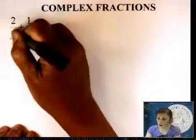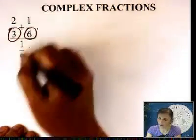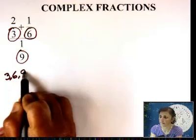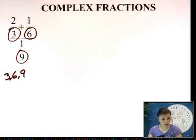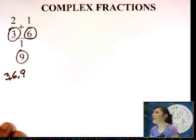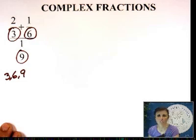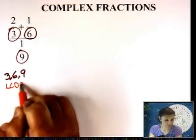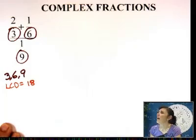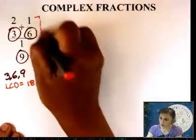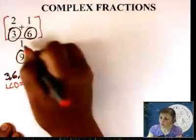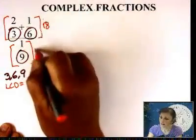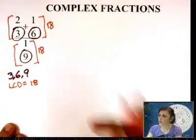You go and you look at all the denominators involved. In this case, it is 3, 6, and 9. You go and you find the lowest common denominator of 3, 6, and 9, all of them involved. And I know that this happens to be 18. Then this is what you do. You put a bracket on top, bracket at the bottom. You put 18. And then you FOIL.